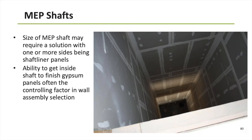For MEP or mechanical shafts, the unique aspect is that they're typically small in size, which makes it physically difficult to get inside to finish — taping, mudding, and painting — after the fact. The shaft liner panel system is often used in this situation. The nice part is that it's a tilt-up system — you can tilt it up from outside the shaft and don't have to get back inside afterwards to finish that face. So shaft liner panel systems are pretty handy in small shaft applications.